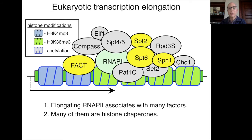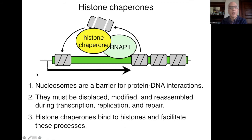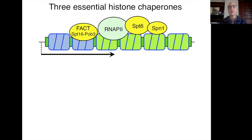Several of the factors are histone chaperones, shown in yellow on this slide. Histone chaperones help overcome the barriers that nucleosomes create during transcription. Nucleosomes need to be displaced, modified, and reassembled during transcription, DNA replication, and DNA repair. Histone chaperones all bind histones in some way and facilitate these processes, but the question for us is: why are there so many histone chaperones needed during transcription?